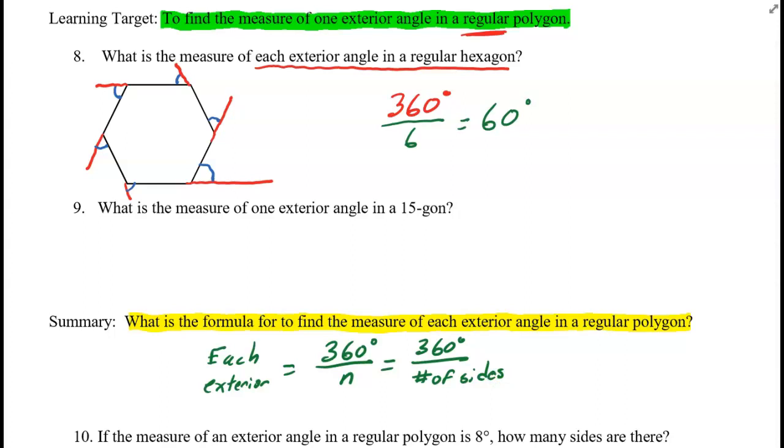So if we look at problem number nine, what is one exterior angle in a, and I should have the word regular, regular 15-gon. I would take 360 degrees and divide by 15. And using my calculator here, I get each exterior angle is 24 degrees.